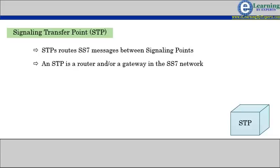An STP is a router and or gateway in the SS7 network. Because it acts as a network hub, an STP provides improved utilization of the SS7 network by eliminating the need for direct links between signaling points.